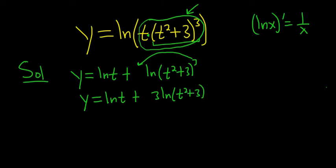Now we're ready to take the derivative. So y prime, the derivative of ln t is 1 over t. And the derivative here, the 3 hangs out, and it's 1 over t squared plus 3 times the chain rule, derivative of the inside, so 2t.